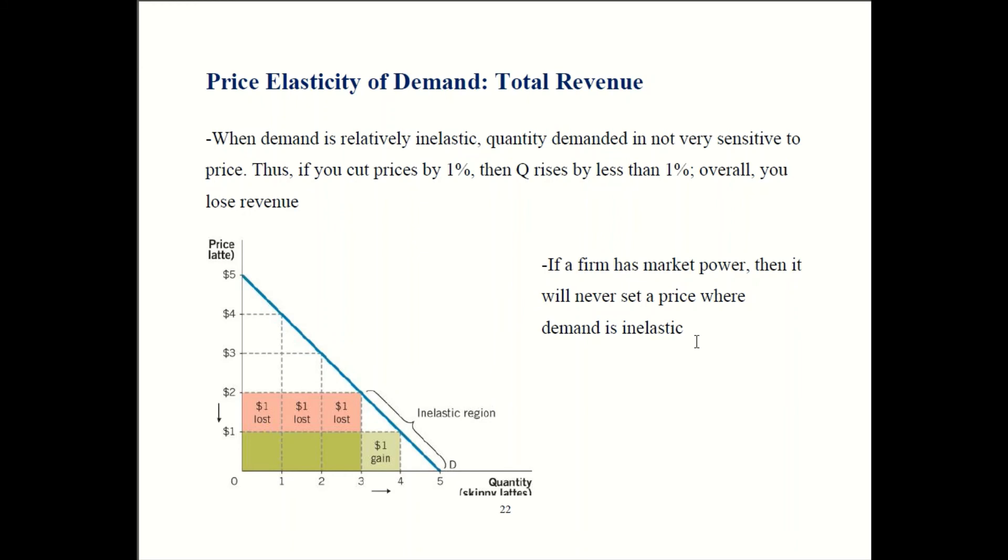Now, last case, if demand is inelastic, then cutting prices loses revenue. So here we have a price of two dollars per unit and we sell three units. Two times three is six, so six dollars in revenue. If you cut prices, consumers respond to that by buying more, but they only buy a little bit more. Now you're selling four units instead of three. One dollar per unit times four units is four dollars in revenue. Revenue goes down from six dollars to four dollars. So two dollar net loss in revenue. Now in this case, actually, we can say unambiguously that the firm would not want to do this if they have influence over price.